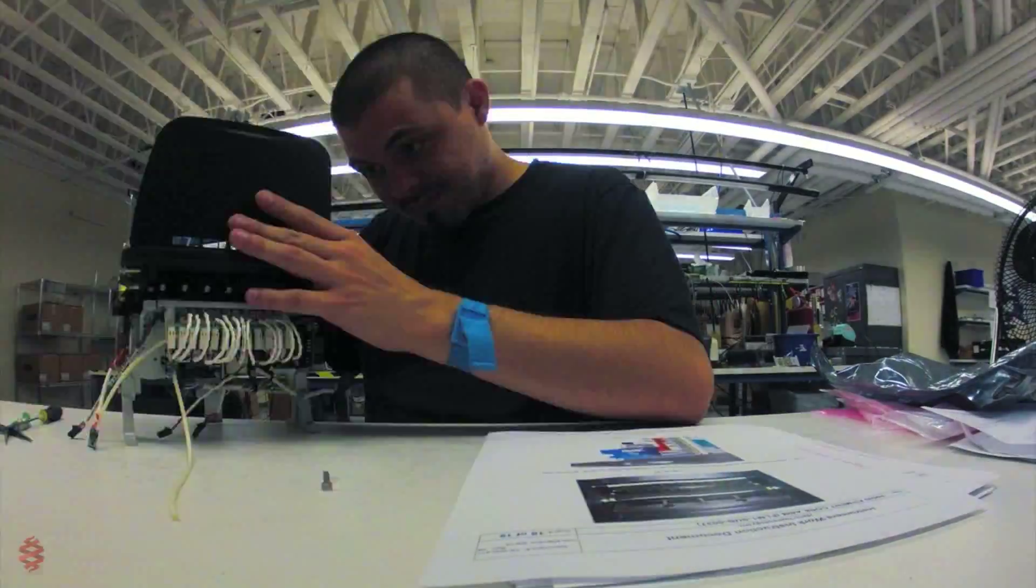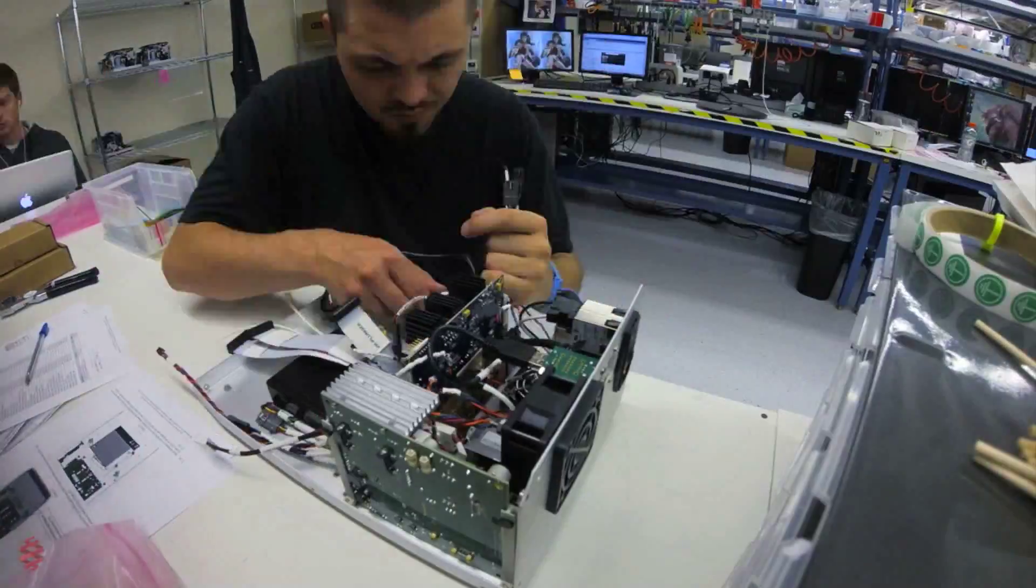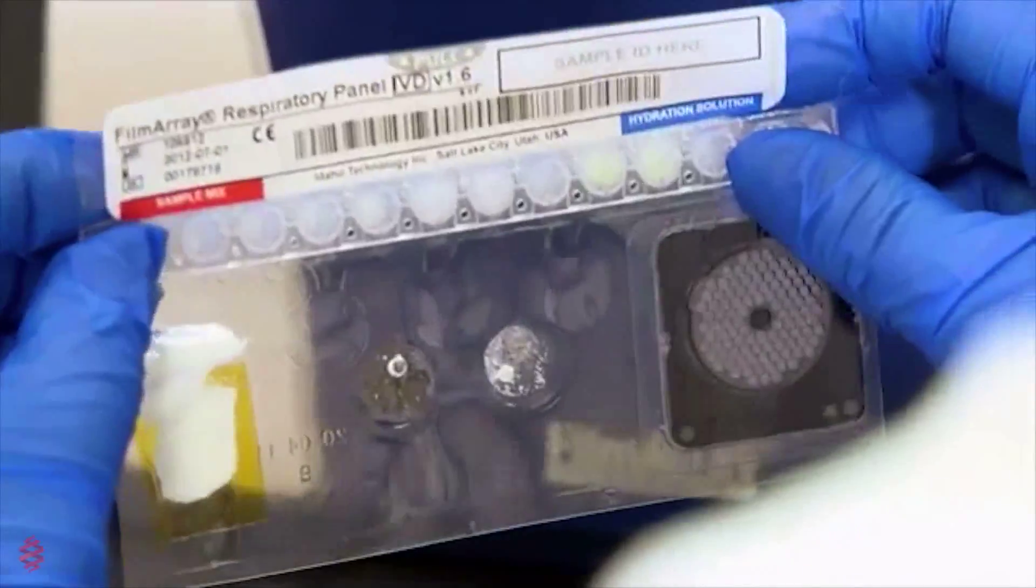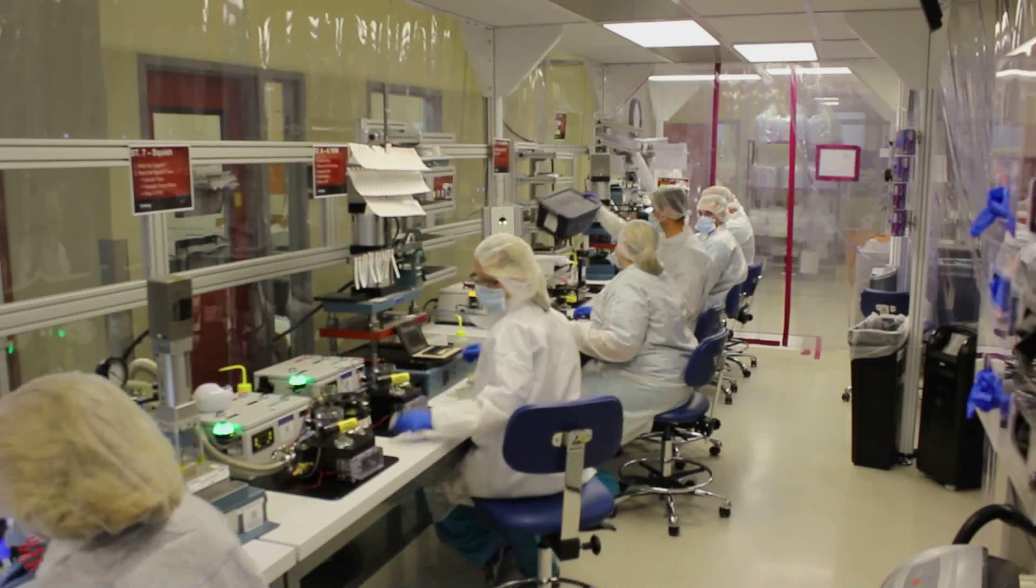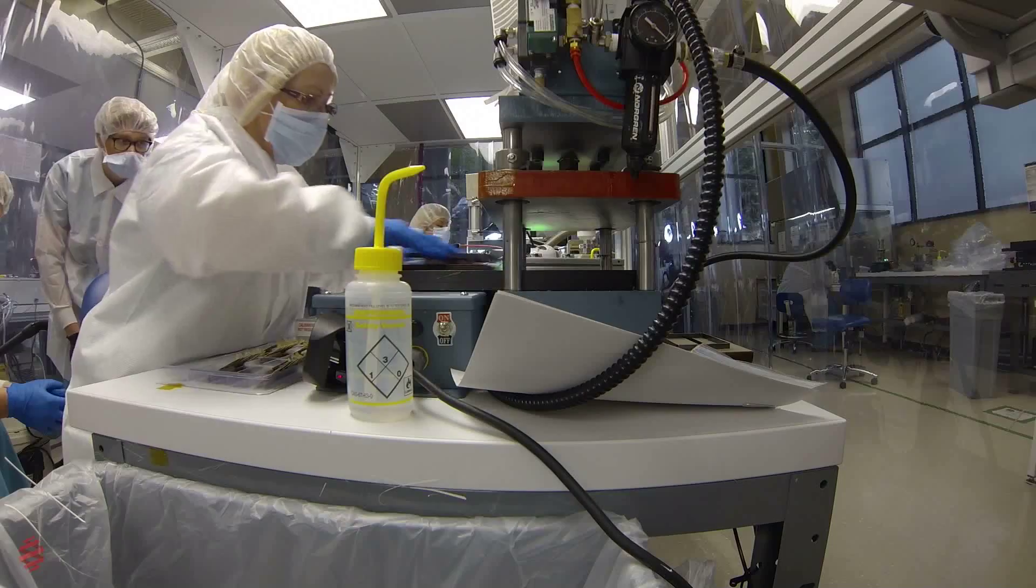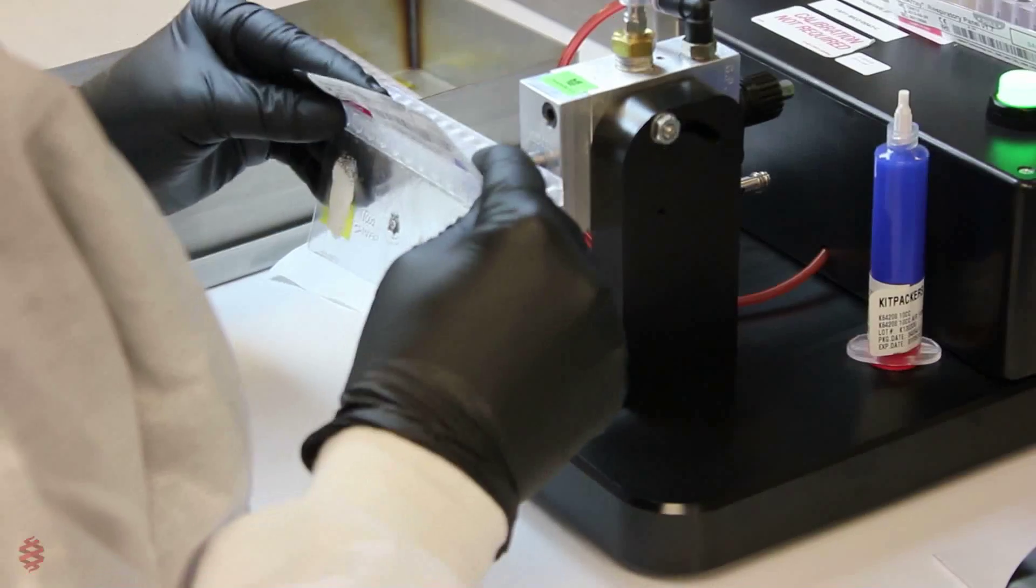Some of us spend our days building and testing instruments. Others work in production teams to assemble and test disposable test kits we call pouches. With growing demand for pouches, we've built several production lines, with up to three production teams working on different shifts.